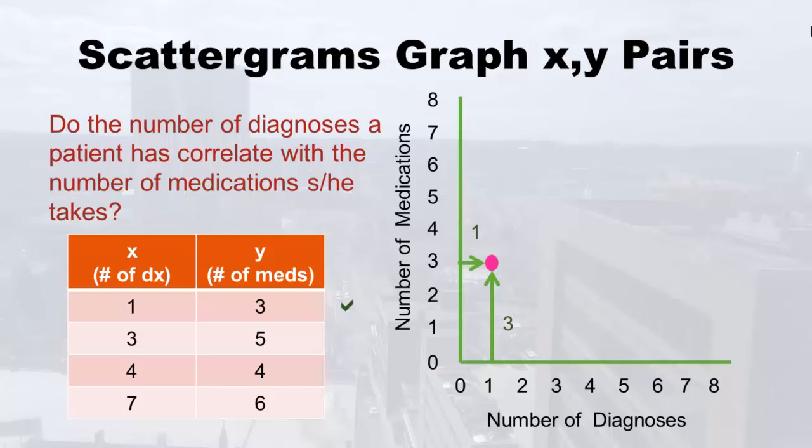Let's start making our scattergram out of these data. I labeled the x-axis 'number of diagnoses' and the y-axis 'number of medications.' Because x is one, I went over to one on the x-axis. Because y was three, I went up three. And there goes the dot — that's where the first person gets a dot.